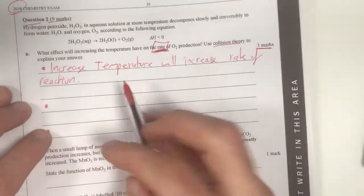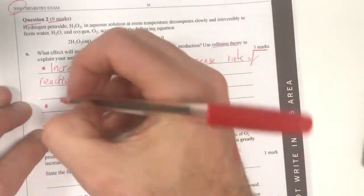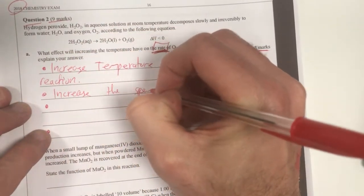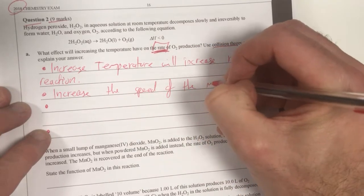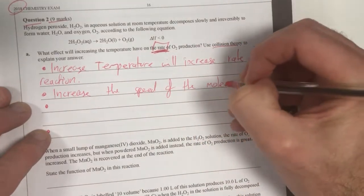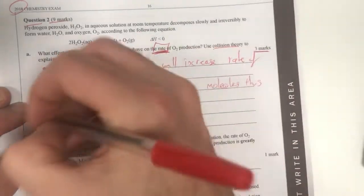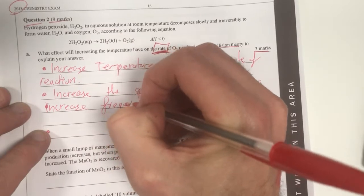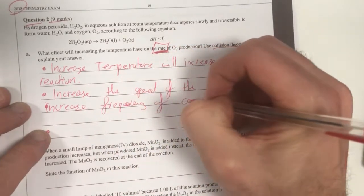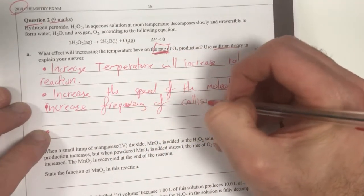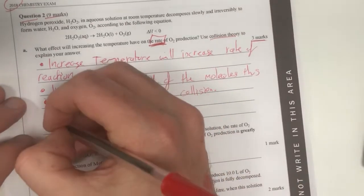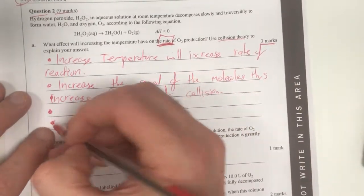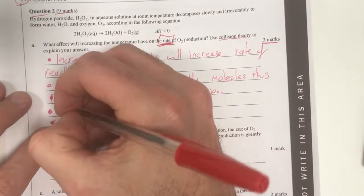Now the increase in temperature has a two-fold effect. First of all, it increases the speed of the molecules, thus increases the frequency of collisions. That's your first point in that area. But also you need to understand that it's increasing the energy that these things have, so therefore we're overcoming the activation energy.